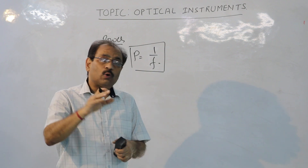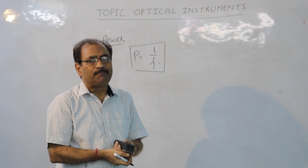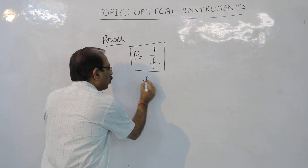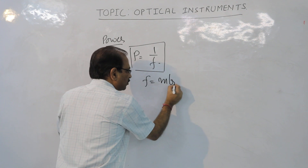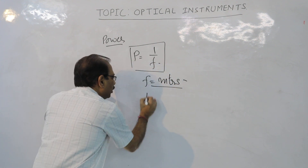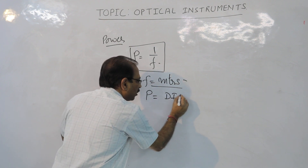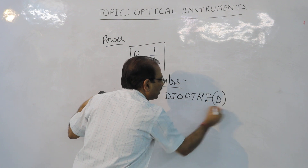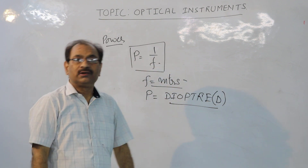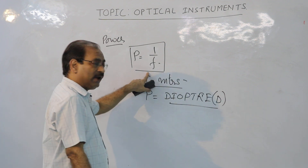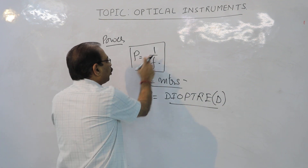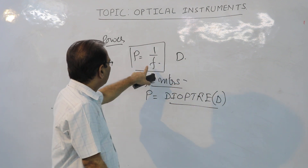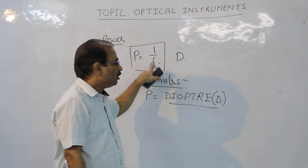Now, what must be the SI units for the power of the lens? Remember, if you take focal length in meters, then the SI unit for the power of the lens will become diopter, spelled D-I-O-P-T-R-E. In short, we write it as capital D. So remember, P is equal to 1 upon F, where D means diopter. This is the formula for the power of a lens.